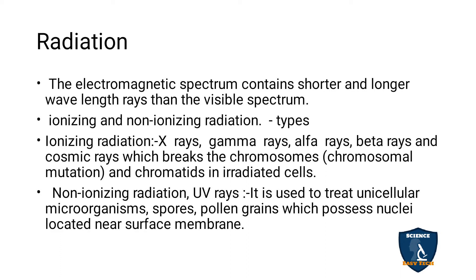Next is radiation. Electromagnetic radiation may have shorter or longer wavelengths, visible through the spectrum. There are two types: ionizing and non-ionizing radiation. Ionizing radiation has a shorter wavelength, and examples include X-rays, gamma rays, alpha rays, beta rays, and cosmic rays.